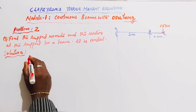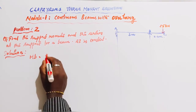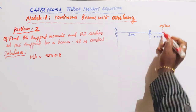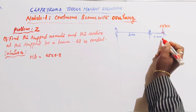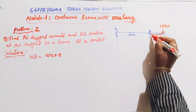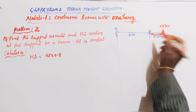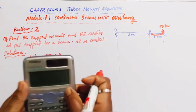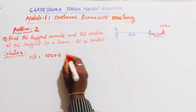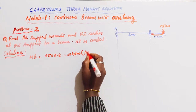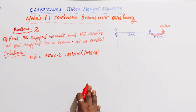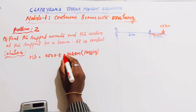Moment at B: MB equals 25 into 0.8. This span is 0.8 m, and span AB is 3 m. A point load of 25 kN acts at C, and the overhang span BC is 0.8 m. So MB = 25 × 0.8 = 20 kilo Newton meter. It's a hogging moment.